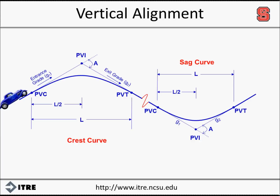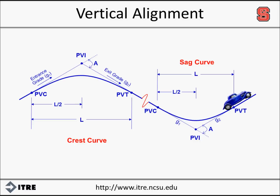Vertical curves are used to provide a smooth transition from one grade to another. The low or high point of a roadway will occur along a vertical curve as the grade of the roadway changes. There are two general types of curves: a crest curve that has a concave down shape, and a sag curve which has a concave up shape. A crest curve can result in a high point while a sag curve can result in a low point on the roadway.